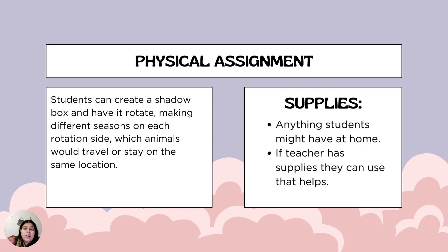For the physical assignment, I thought that students could create a shadow box. This shadow box can rotate, and each rotation may have a different season and different locations on where animals would travel or stay in the same location.